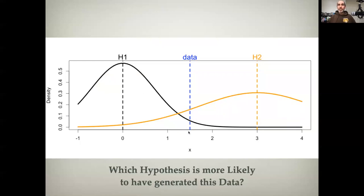Now I observe a data point at 1.5, exactly halfway in between the two. Question would be, which hypothesis is more likely to have generated this data? Now, most folks, if I was doing this live, I would poll everyone to get their opinion, but consistently most folks tend to agree that hypothesis two is more likely to have generated this data because the probability density of that point is higher.